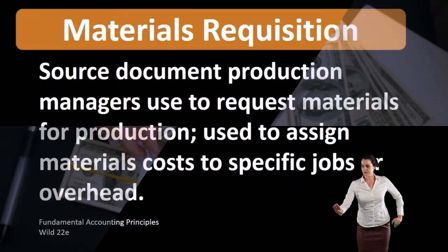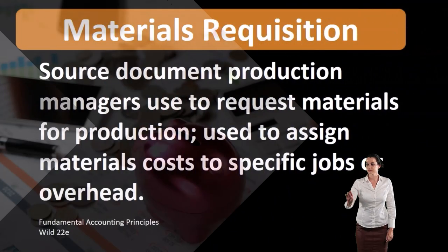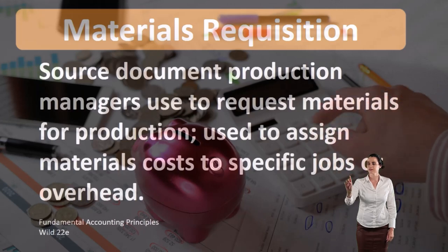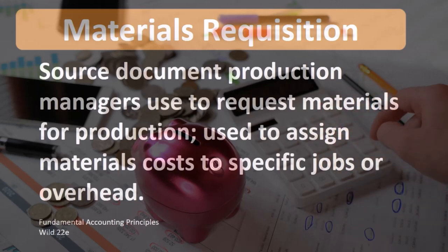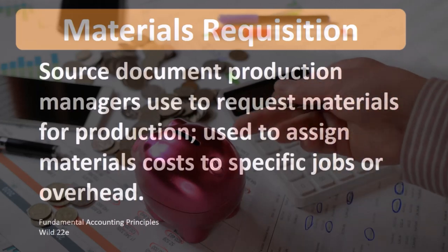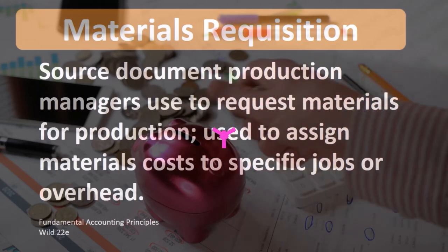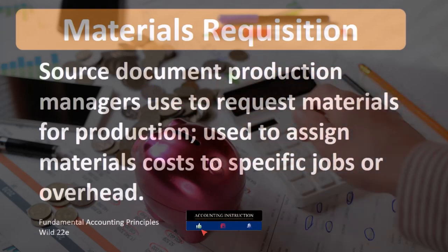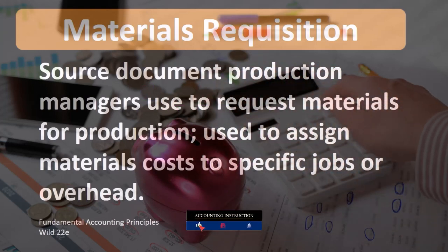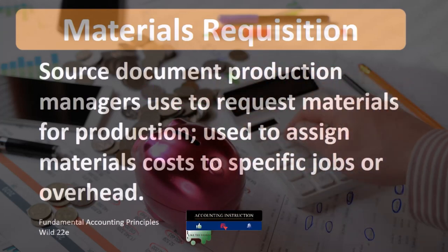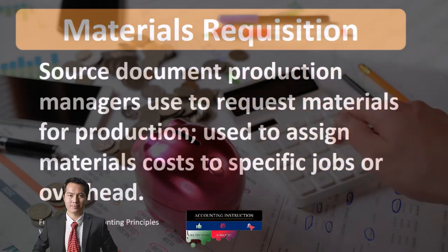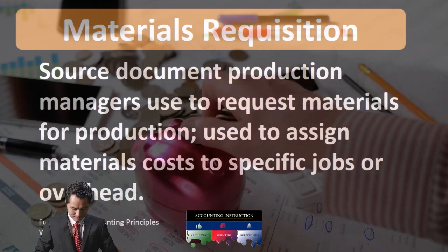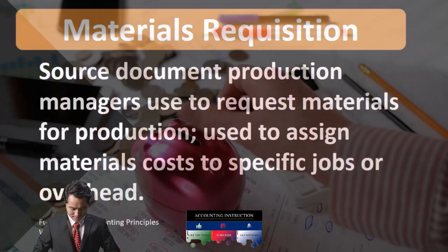Those finished goods are ultimately moved to cost of goods sold, the expense account. Considering material requisition, we're thinking about the raw materials portion at the front end of the production process where we purchase the raw materials.